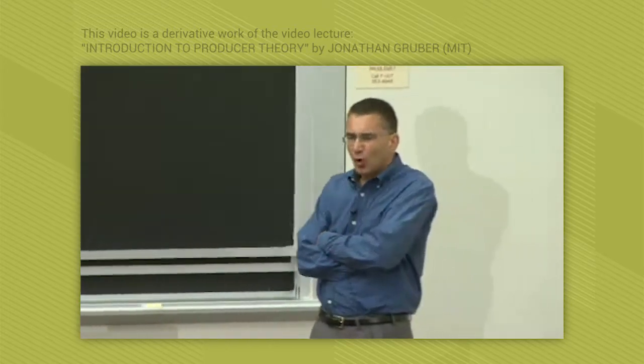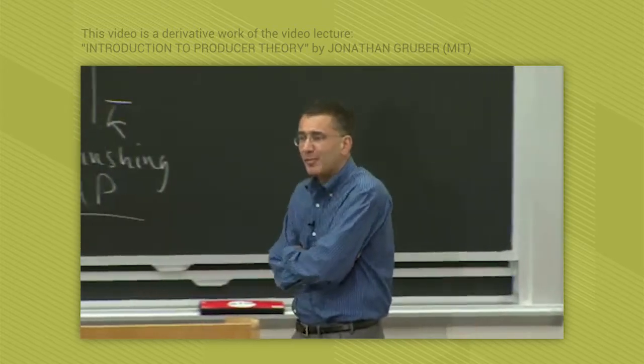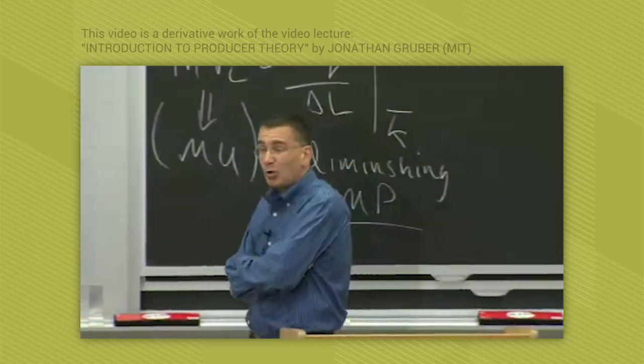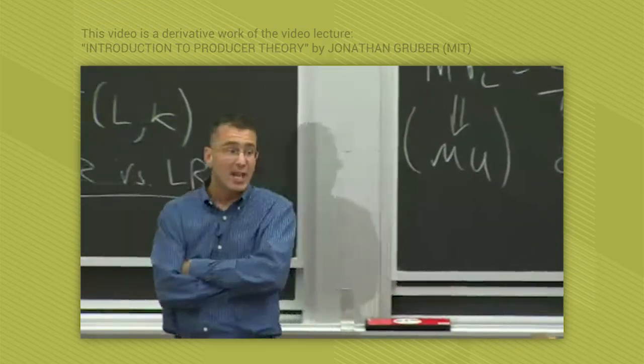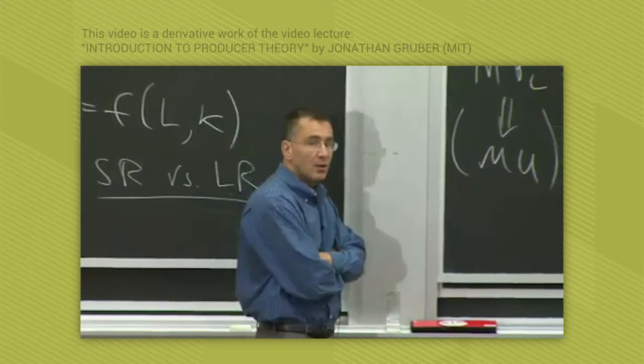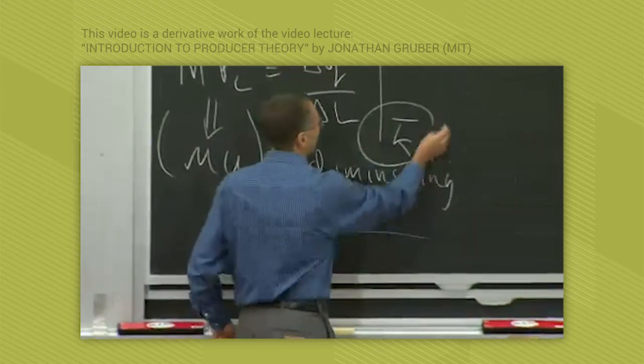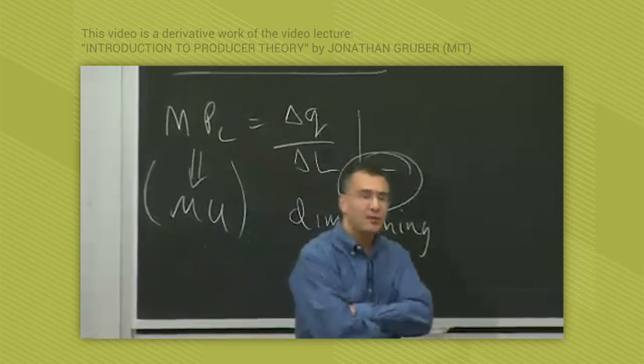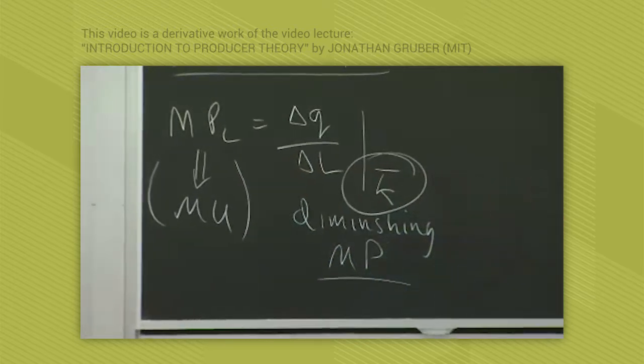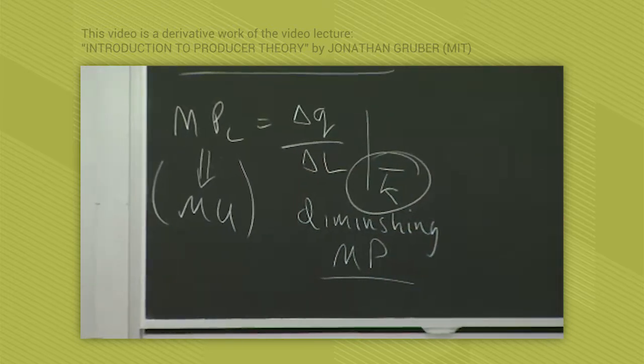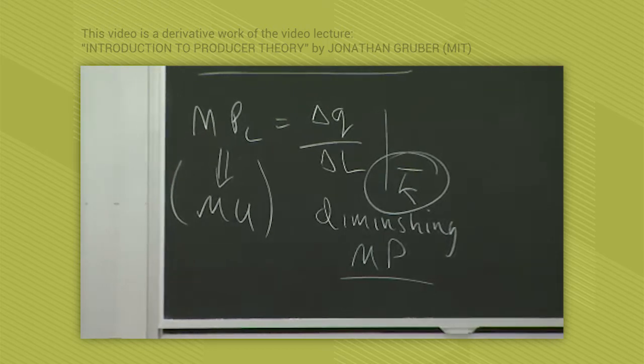The intuition for why each worker does less is a little bit harder. Why should the next worker do less than the first? The key is that we're holding capital constant. The reason each worker does less is because they only have the same amount of stuff to work with.